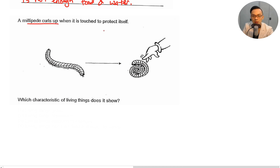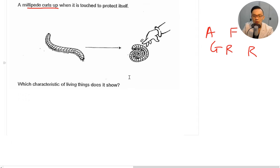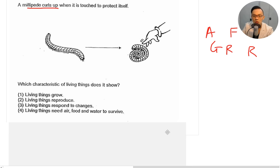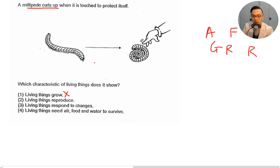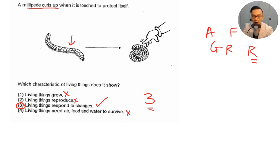A millipede curls up when touched to protect itself. Always write down the six characteristics: air, food, water, grow, respond, reproduce. What characteristic of living things does this show? It doesn't show growth, it doesn't show reproduction. It shows responding to changes in the environment — when touched, it curls up, and that is a response to a change in environment. So the answer is number three. It's important to recognize what characteristic is being shown.